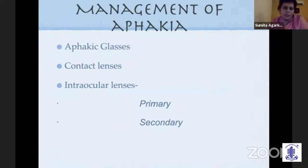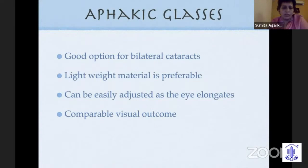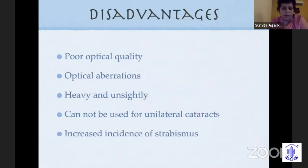Regarding aphakia management, one good option for bilateral cataracts is aphakic glasses, despite IOLs being implanted in almost 90% of children who undergo surgery. There are some cases where you may not put the lens. Lightweight materials are available and can be easily adjusted as the eye elongates and refraction changes. Visual outcomes are comparable to both glasses and contact lenses. Disadvantages of glasses include heaviness, optical aberrations, and they cannot be used for unilateral cataracts.